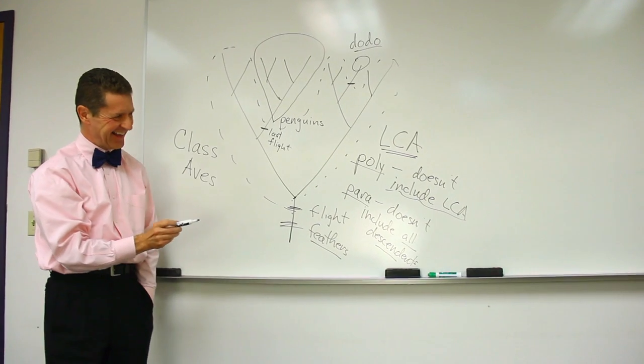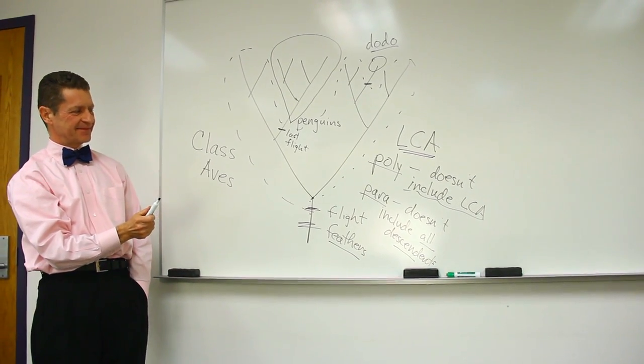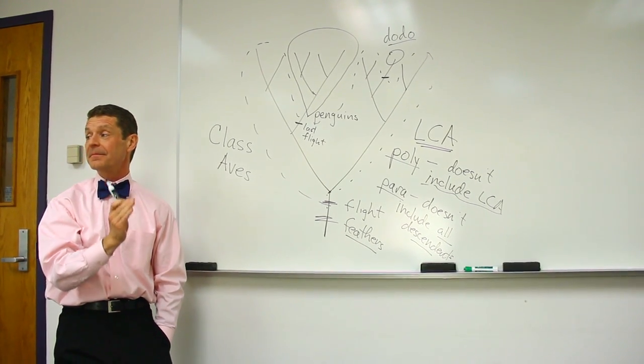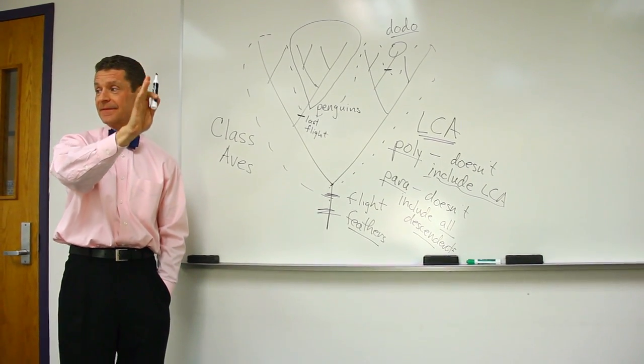A polyphyletic doesn't include the last common ancestor and a paraphyletic does include the last common ancestor. But not all the descendants. Oh, got it, got it.